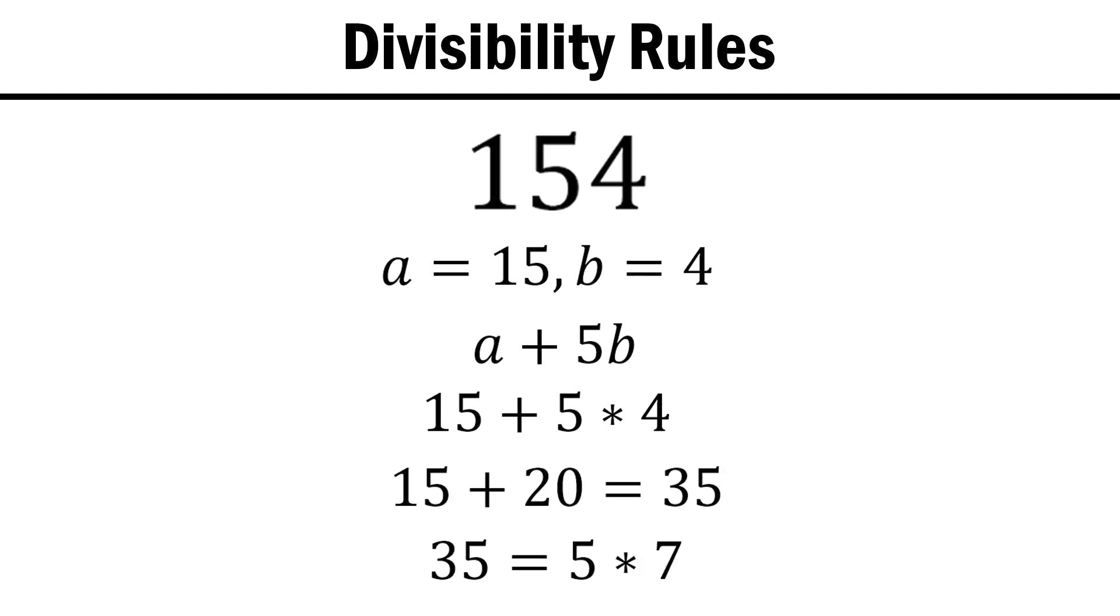For 154, we know a is 15 and b is 4, and to calculate a plus 5b, we do 15 plus 5 times 4, which is equal to 35, or 5 times 7. Since our result is a multiple of 7, our original number is as well.